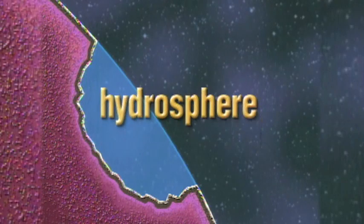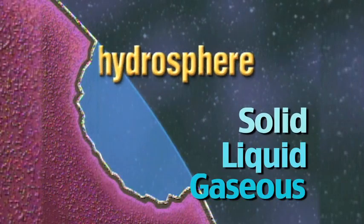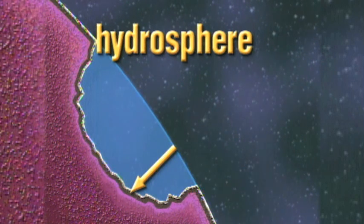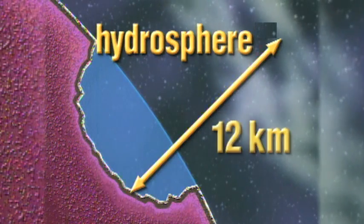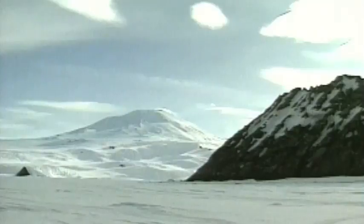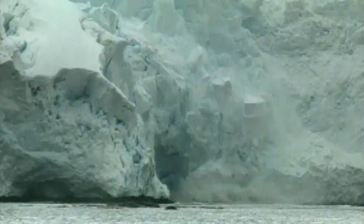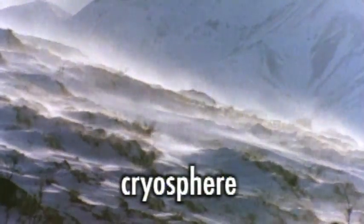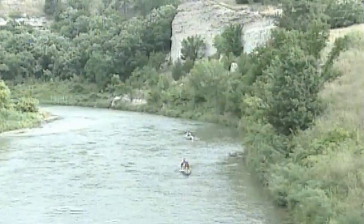The hydrosphere contains all the solid, liquid, and gaseous water of the planet. The hydrosphere extends from the Earth's surface downward several kilometers into the lithosphere, and upward about 12 kilometers into the atmosphere. Solid or frozen water can be found in the form of glaciers, ice caps, and icebergs — this is also called the cryosphere. Liquid water can be found in the form of oceans, rivers, lakes, streams, and groundwater beneath the Earth's surface. Gaseous water, or water vapor, can be found in the atmosphere.